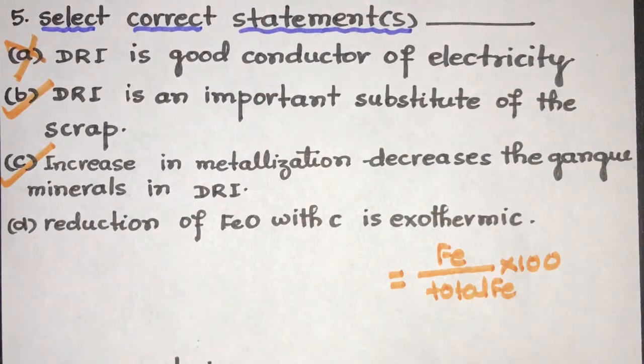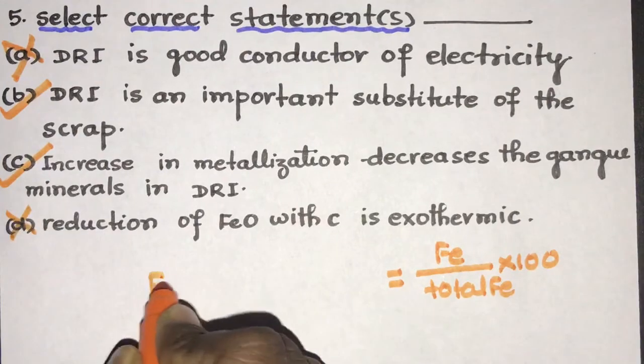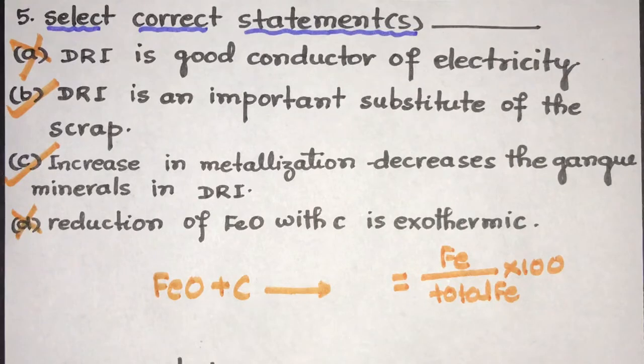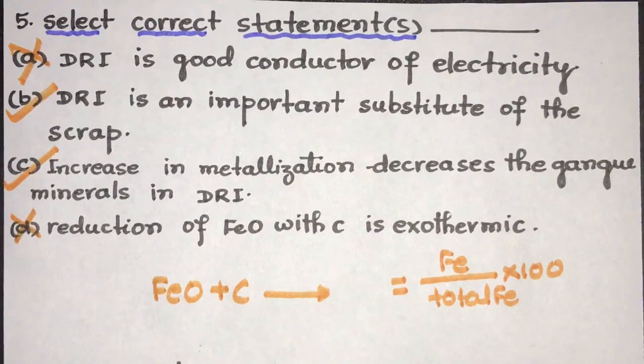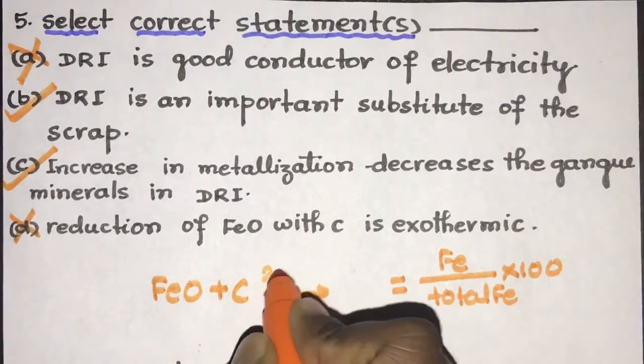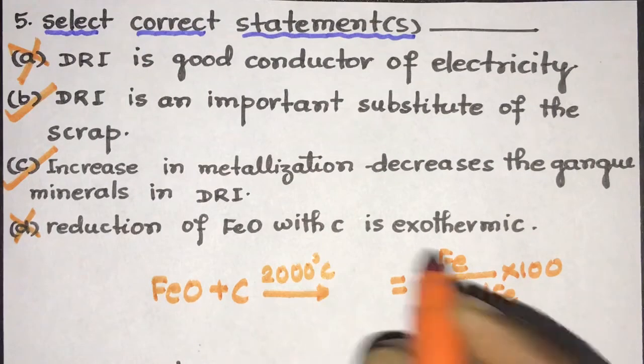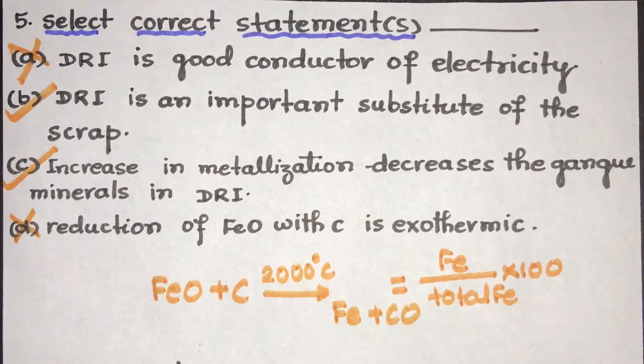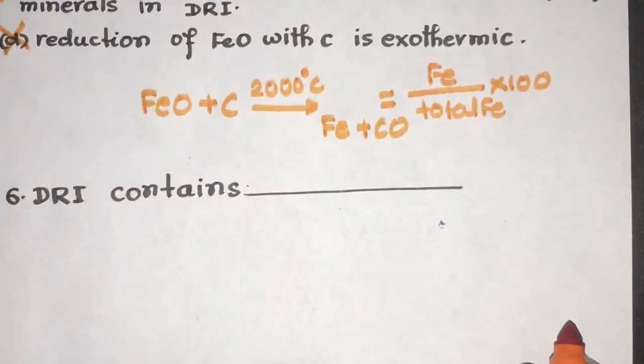Next. Reduction of FeO with carbon is exothermic. This is absolutely incorrect. Because we know that FeO plus C, this reduction occurs at very high temperature in blast furnace also, and it requires around 2000 degree centigrade. This reaction is highly endothermic. So this is not exothermic.